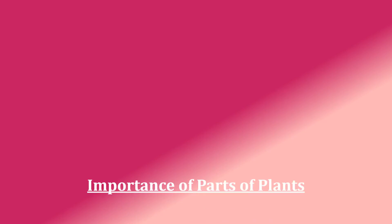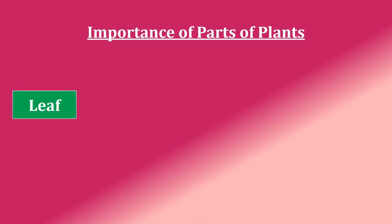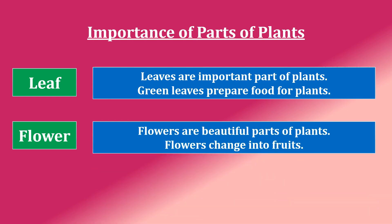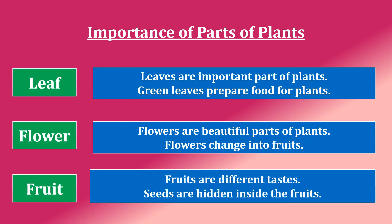Leaves. Leaves are an important part of plants — green leaves prepare food for plants. Flower. Flowers are the beautiful parts of plants, and flowers change into fruits. Fruit. Fruits have different tastes, and seeds are hidden inside the fruits.